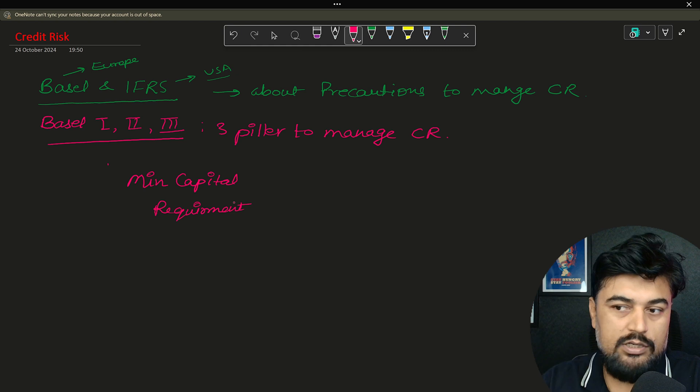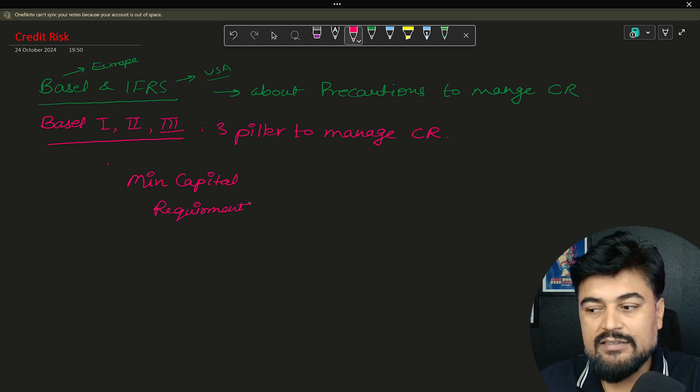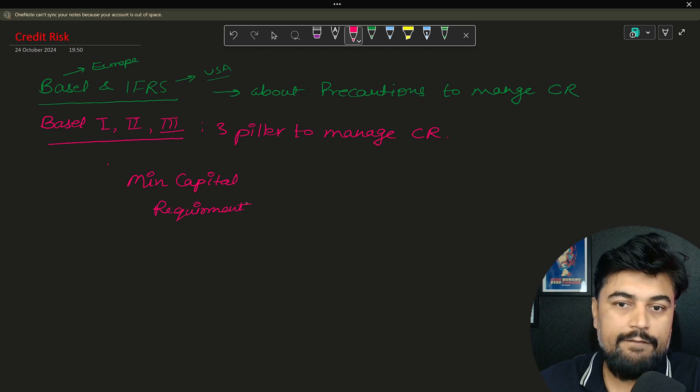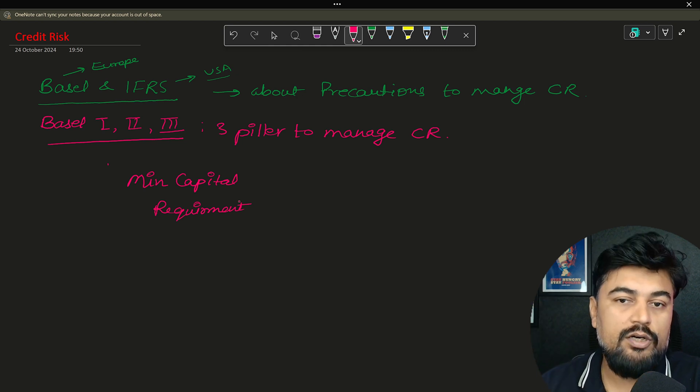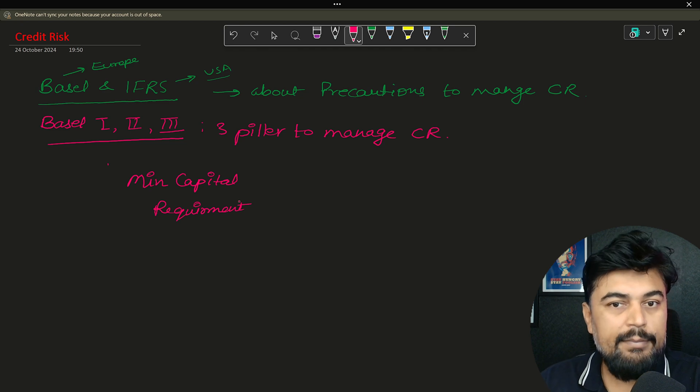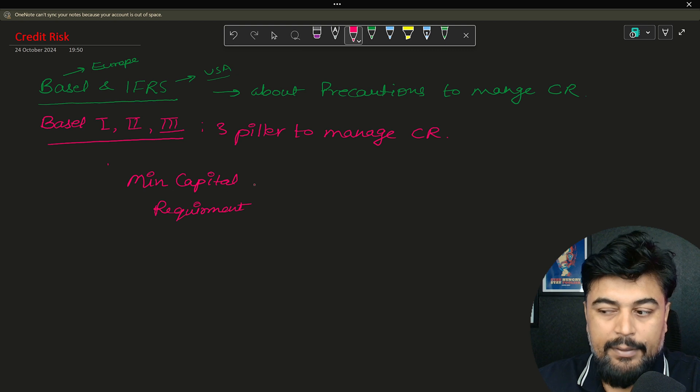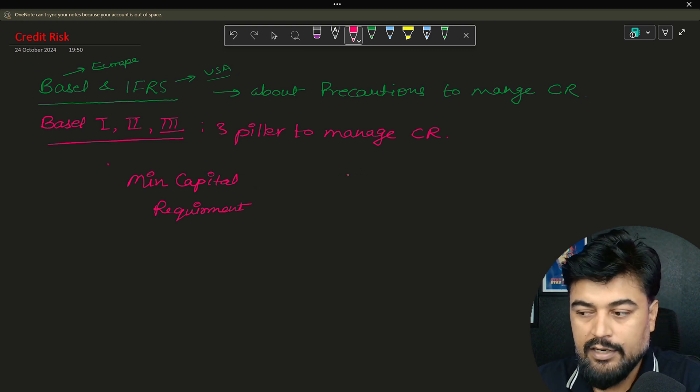The functioning of the bank should not be stopped because of any particular loss. So that is known as minimum capital requirement. That is a percentage which is decided by the governing body of that particular country. Let's say in India it's Reserve Bank of India, so they basically finalize how much minimum capital the bank has to keep.